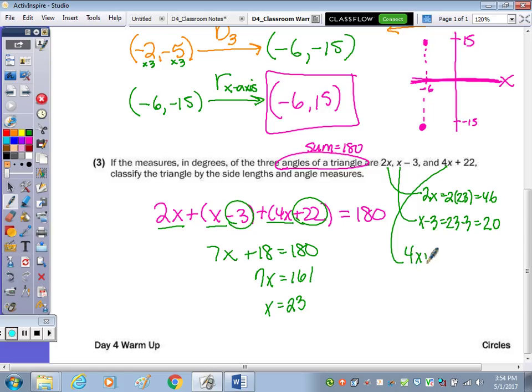And then last, 4x+22, I'm going to do 4 times 23 plus 22, and we get 114. So my angle measures are 46 degrees, 20 degrees, and 114 degrees.